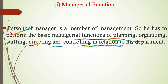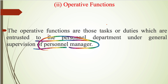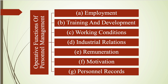The second function is operative function. These are tasks or duties which are entrusted to the personal department under the general supervision of the personal manager, and are performed under that supervision within the organization. There are various types of operative functions: first is employment, second is training and development, third is working conditions, fourth is industrial relations, fifth is remuneration, sixth is motivation, and the last is personal records.